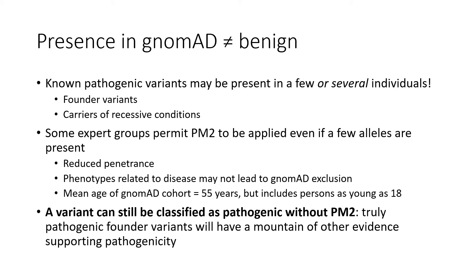For those working in the space of variant curation or working to establish gene-specific variant curation guidelines, this brings up another important point. Not every variant that is called pathogenic has to have PM2 applied. A pathogenic variant that is known to be a population founder or recurrent variant is going to result in multiple affected individuals and families with clinical presentations that allow for application of other ACMG-AMP criteria resulting in a pathogenic classification.